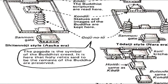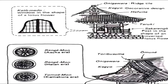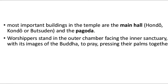Here is a layout of the Japanese palace or the Japanese Buddhist temple. The most important buildings in the temple are the main hall, the hondo or butsuden, and the pagoda. Worshippers stand in the outer chamber facing the inner sanctuary with its images of the Buddha to pray, pressing their palms together.